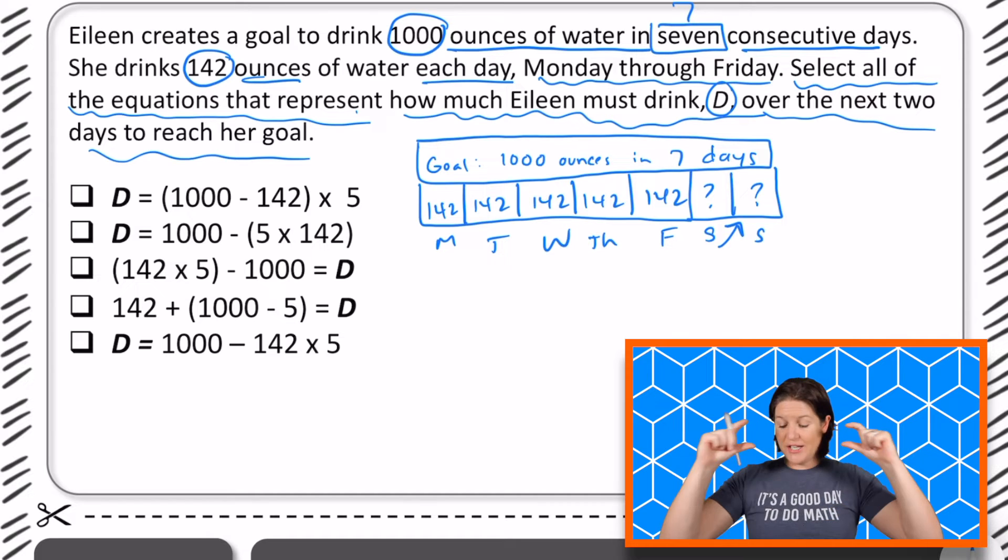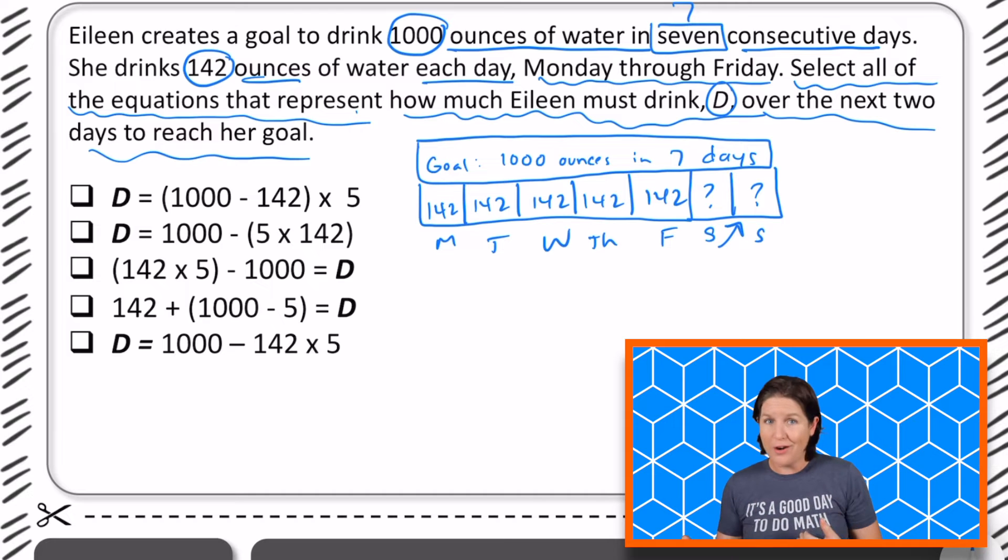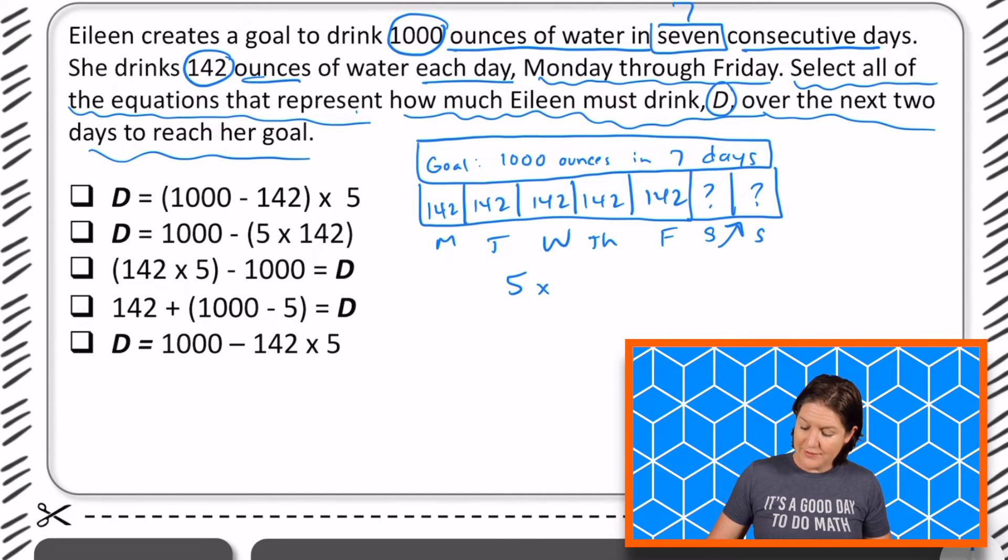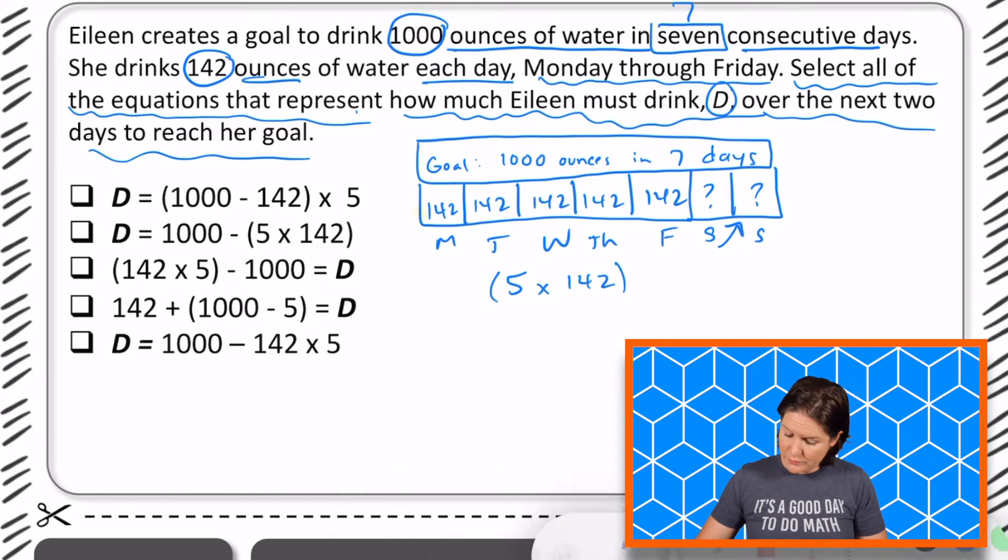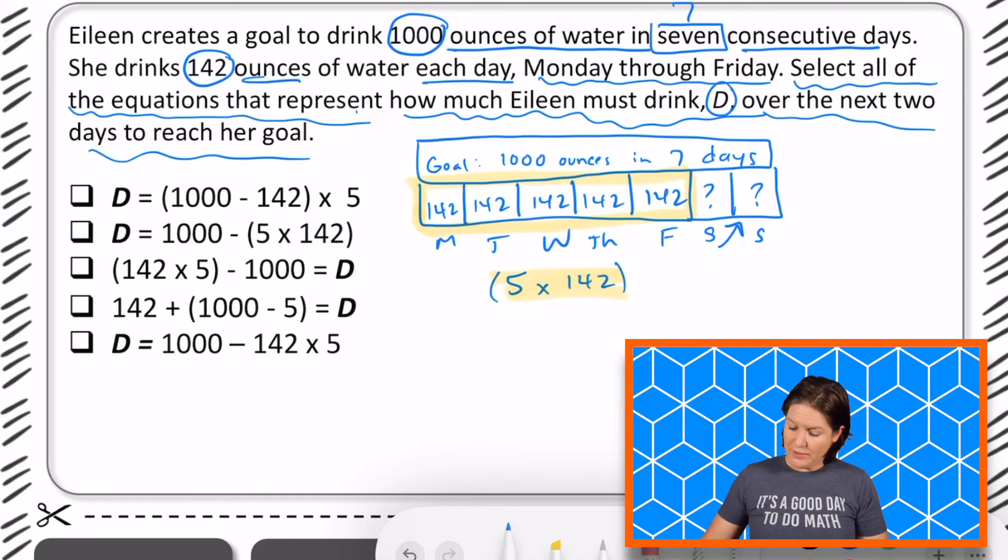All right. So let's see what she needs to do here. Well, first we know she needs to get to a total of 1000 ounces of water. Do we know how much she has had so far? Kind of, we can figure it out, right? We know that for one, two, three, four, five days, she's had how many ounces of water each day? 142, right? So we could say five times 142, and we could get that total, this right here.